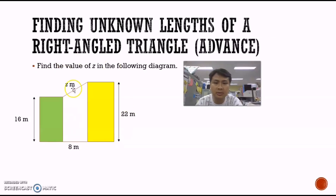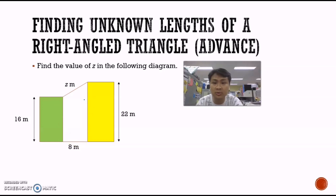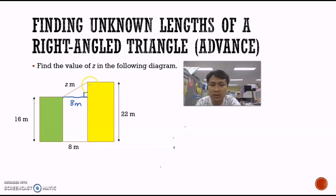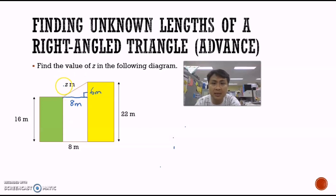In this question, we need to find the value of z. Currently there are no right angle triangles visible in the diagram, but we can create one by inserting a line. By drawing that line, we create a right angle triangle. The base of this triangle is 8 metres — the same as the base of the shape. The height is 22 minus 16, giving 6 metres. With these two lengths known, we can calculate z.